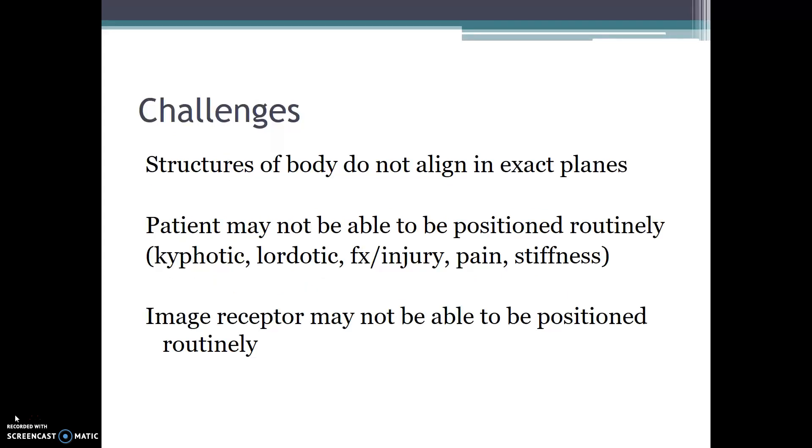Some challenges we face when we're trying to minimize distortion. Structures of the body do not align in exact planes. A patient may not be able to be positioned routinely. For example, if they're kyphotic, lordotic, if there's a fracture or injury, if they have severe pain, or if they are stiff. The image receptor may not be able to be positioned routinely.